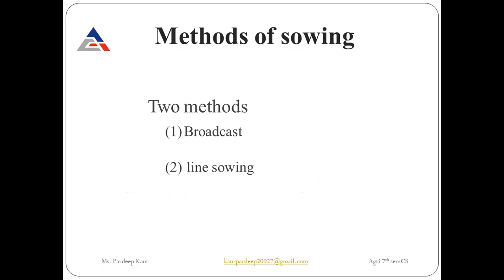There are two methods of sowing fenugreek. The first is the broadcast method, where seeds are spread unevenly over the field. The second is line sowing, where a certain amount of seed is placed in rows with a defined spacing between them.